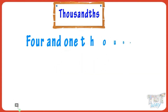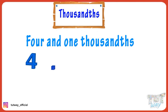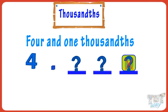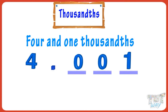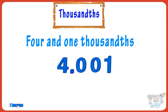Now, how will you write four and one thousandths? First write four, now write 'and,' that is decimal, so put a decimal. One thousandths means there are three digits after the decimal and the last digit is not zero. So place one at the third place, and zeros will hold the places where there are no digits. So our number is four point zero zero one.